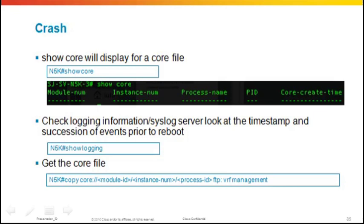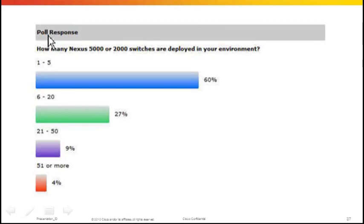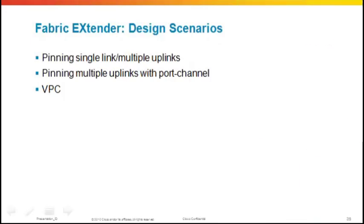This ends the 5K section. Let's look at our last polling question: How many Nexus 5000 or 2000 series switches are deployed in your environment — 1 to 5, 6 to 20, 21 to 50, or 51 or more? Excellent results. Now we'll talk about Nexus 2000 configuration and troubleshooting.